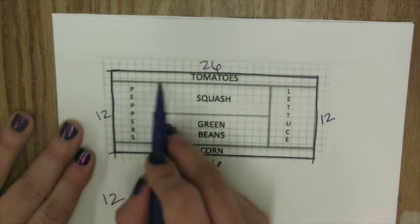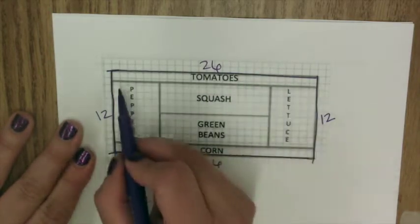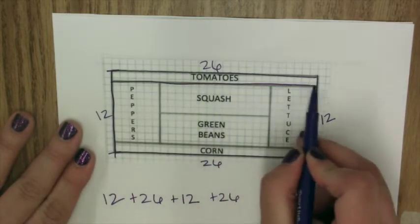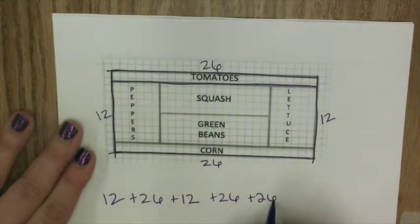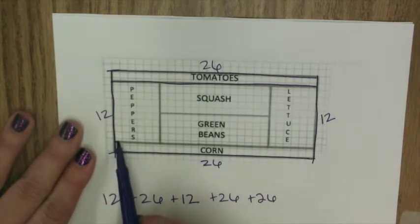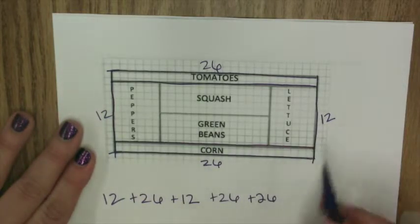And then our top edge would also be 26. Alright, so this piece here also would be 26 all the way across. This would also be 26 all the way across.